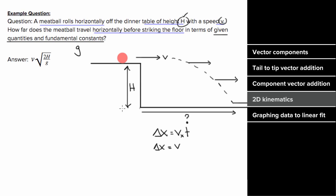To get the time of flight, we use another equation for the vertical direction. The vertical displacement is not h — it's negative h, since the meatball fell downward. The initial velocity in the y direction is not v; it's zero, since the meatball had no vertical velocity right when it left the table — it only had horizontal velocity.